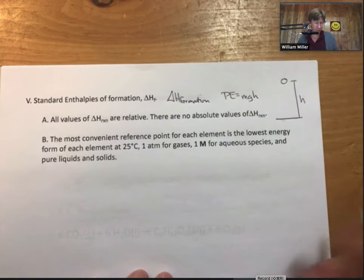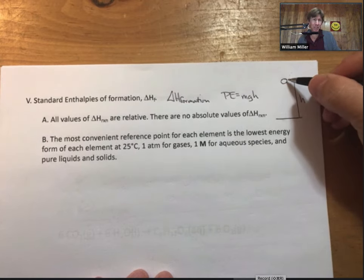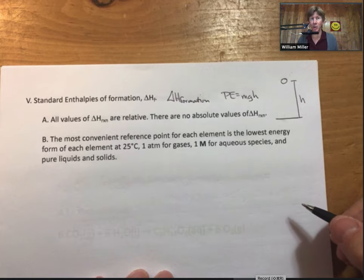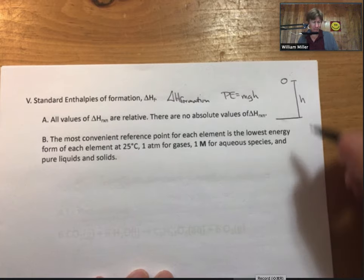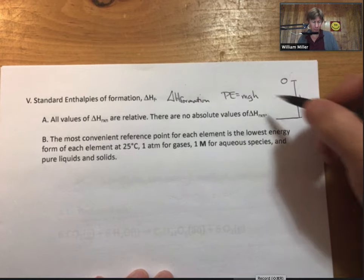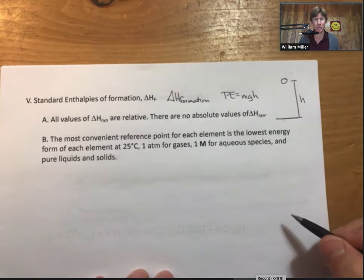And potential energy of this ball is really the change in potential energy as the ball goes from a specific height to the height we're calling zero. There is no such thing as zero height. Meaning that height is relative, and therefore the potential energy of this ball is relative.